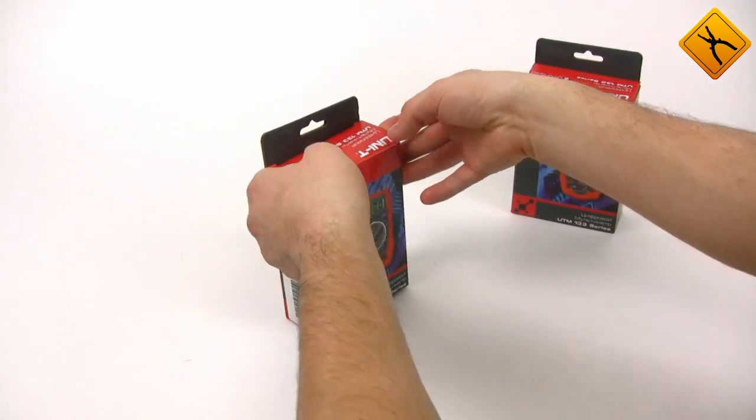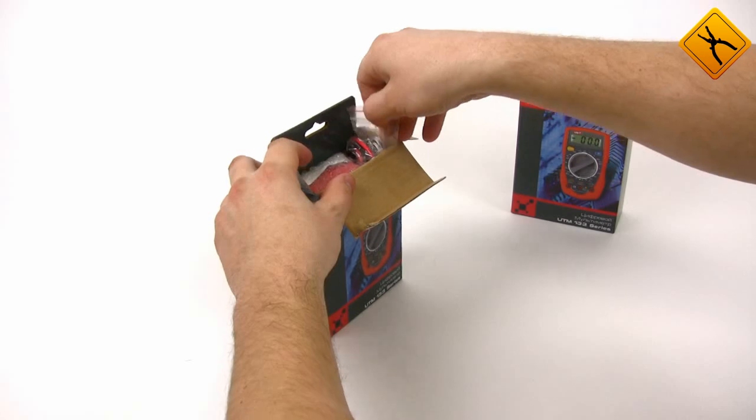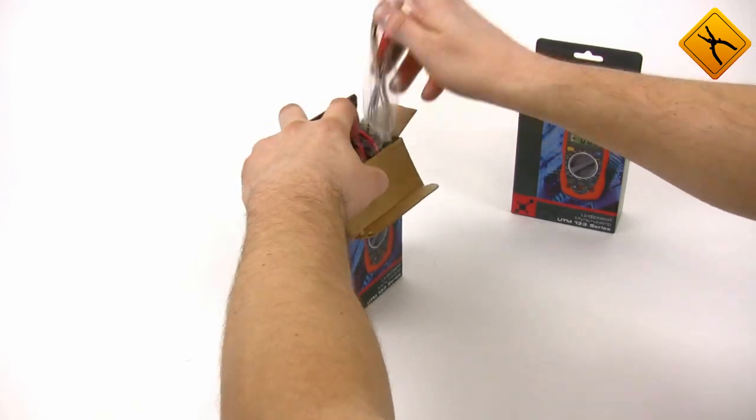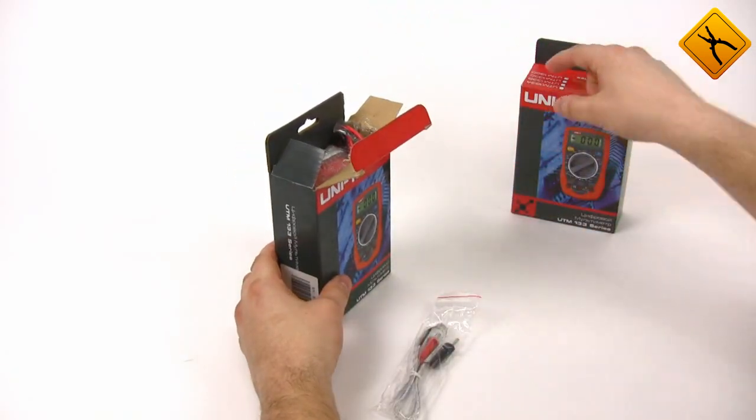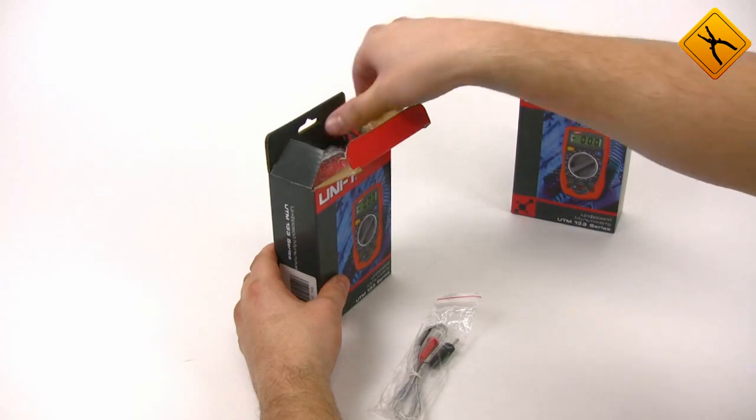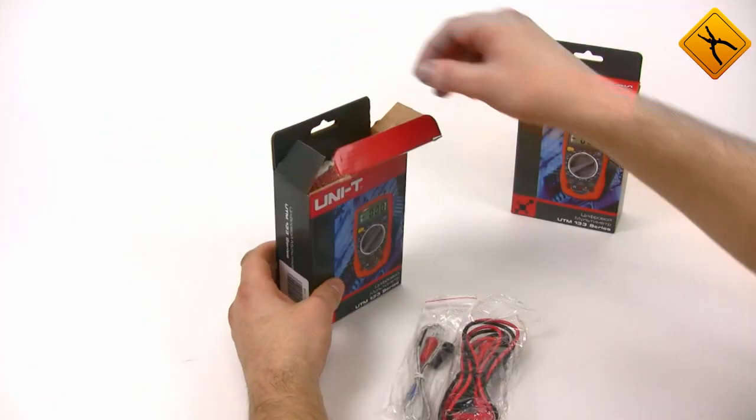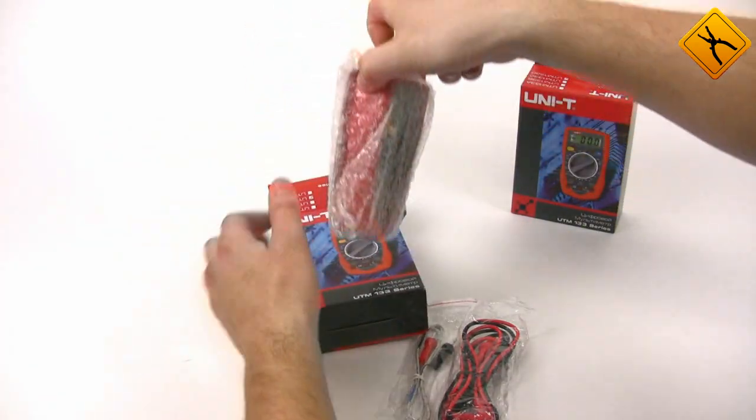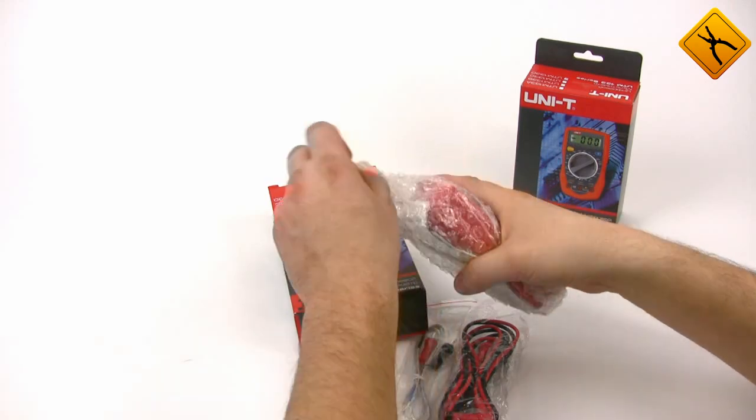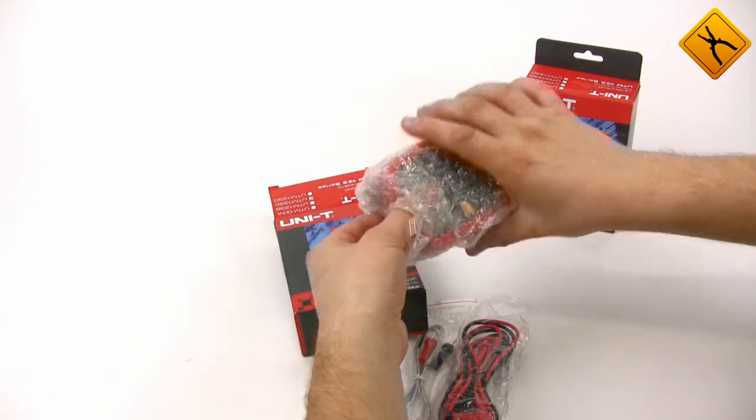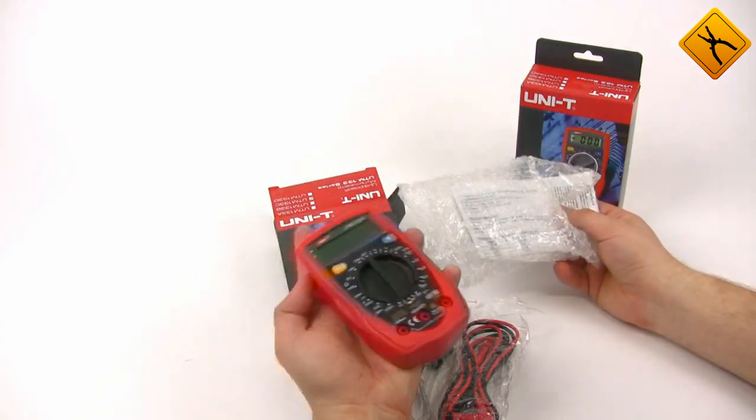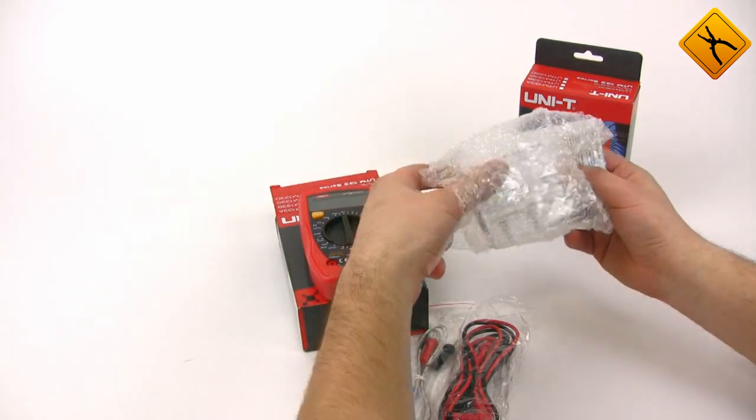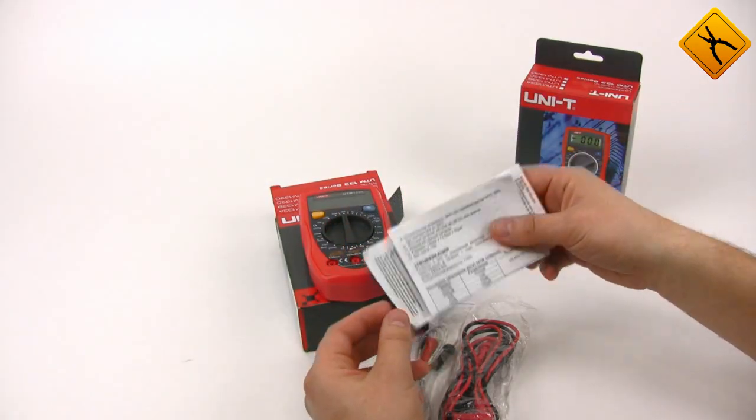Let's look inside the package. Temperature probe, there is no such probe in UT33D package. Test leads, the multimeter itself and the user manual.